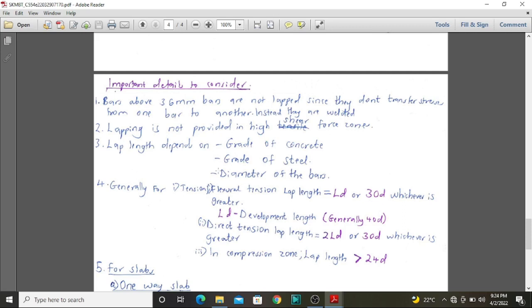Thirdly, the lap length normally depends on majorly three things. The first is the grade of concrete, secondly is the grade of steel, and third is the diameter of the bars. Therefore, if you want to determine this from the Euro code, British standard, Indian standard, or the American standard, these are the main three parameters to consider.